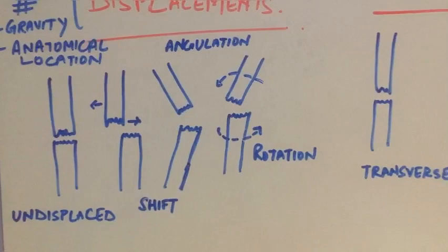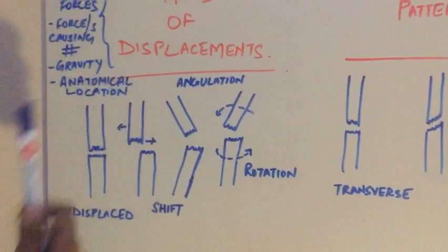Generally speaking, an undisplaced fracture has better prognosis than a displaced fracture in terms of treatment and long-term outcome. So this finishes our types of displacements and the classification based on it.